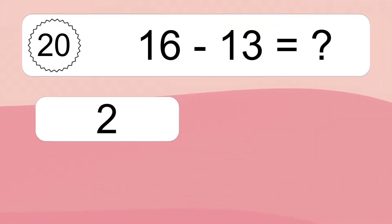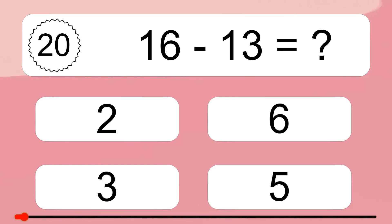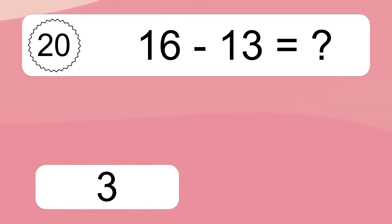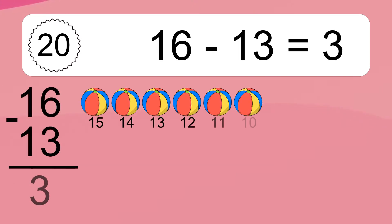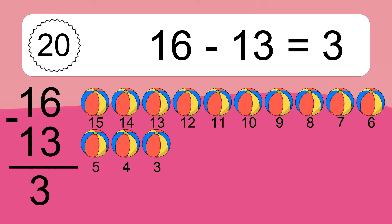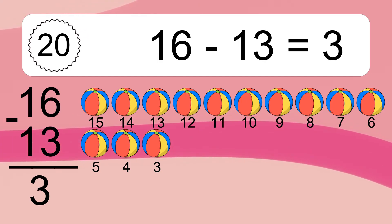16 minus 13 equals what? 16 minus 13 equals 3. Let's count it: 15, 14, 13, 12, 11, 10, 9, 8, 7, 6, 5, 4, 3.